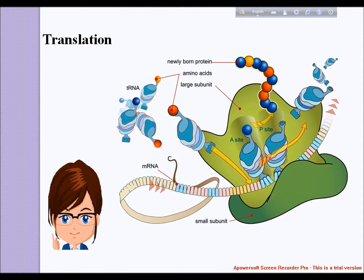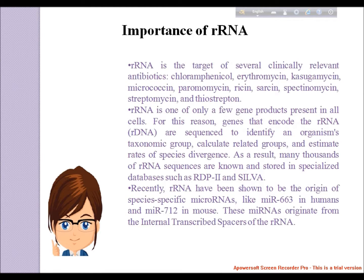rRNA is one of the only gene products present in all cells. For this reason, genes that encode rRNA (rDNA) are sequenced to identify organisms, define taxonomic groups, calculate related groups, and estimate rates of species divergence. As a result, many thousands of rRNA sequences are known and stored in specialized databases such as RDP2 and SILVA. Recently, rRNAs have been shown to be the origin of species microRNAs, like miR-663 in humans and miR-712 in mouse, which originate from the internal transcribed spacers of the rRNA.